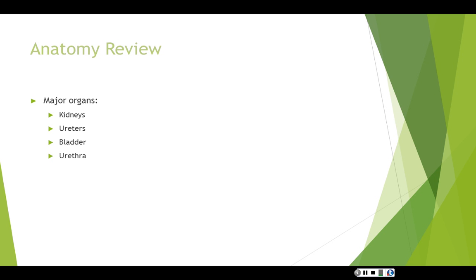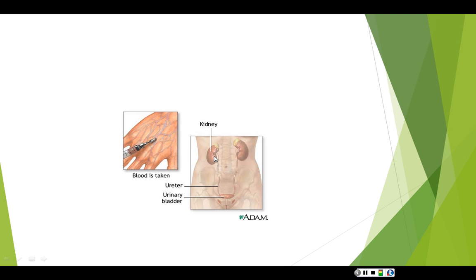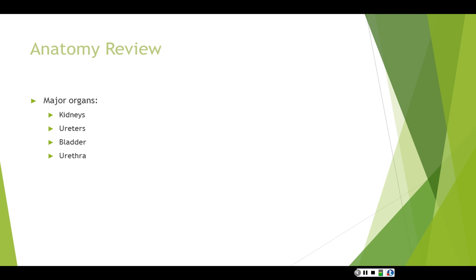Looking at the picture, connected to each kidney you have a ureter that connects at the renal pelvis and extends downward to connect to the bladder. The purpose of the ureters is to carry urine from the renal pelvis to the bladder. An important thing to remember about the ureters is that, like valves in the heart, they are only supposed to allow one-way flow.